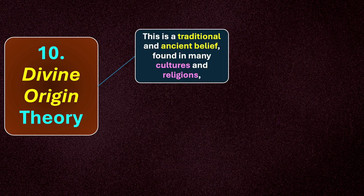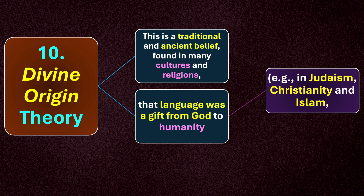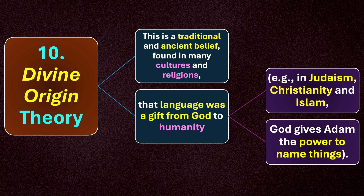The last theory is divine origin theory. This is a traditional and ancient belief found in many cultures and religions that language was a gift from God to humanity. For example, in the belief systems of Judaism, Christianity, and Islam, they believe that God gave Adam the power to name things. The idea is that if God can create humans in physical form, He can also create humans in a way that allows them to communicate with the world.